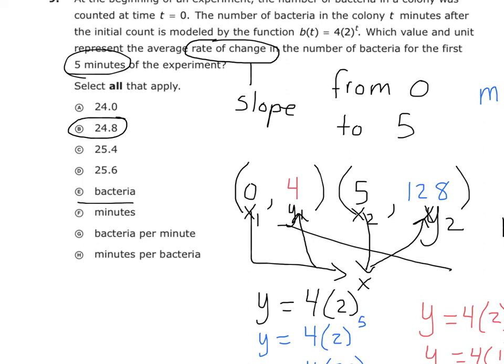24.8 bacteria. That's not a unit because it's wanting to know we are doing bacteria versus time. So it can't just be bacteria. It's going to have to be like either G, which says bacteria per minute, or H, which says minutes per bacteria. Well, minutes per bacteria doesn't even make sense. I got 24.8 minutes per bacteria? No. Your bacteria colony is growing at a rate of 24.8 bacteria per what? Per minute. And so I'm going to select G along with it.